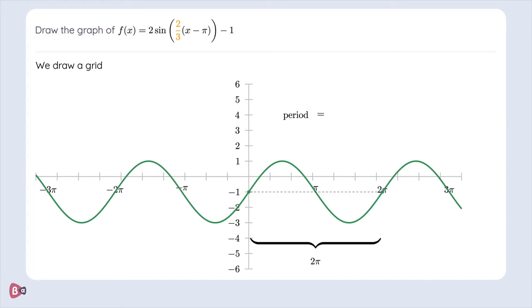The formula is 2π over whatever that number in front of the x is. In our case that's 2/3. So we can simplify this to 2π times 3/2 which ends up being 3π.